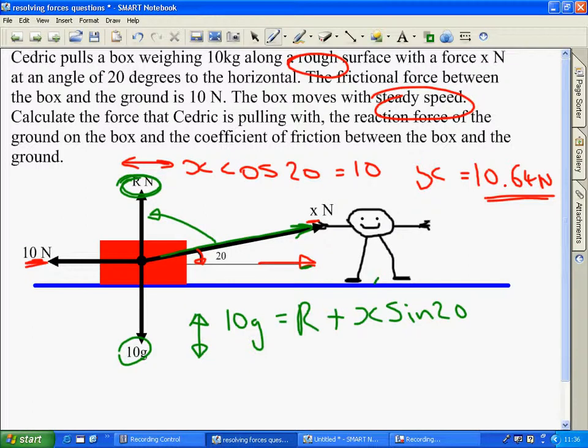Now, we've found x, yippee. So, we can easily just find R from that equation, and we know that R is equal to 94.46 newtons.